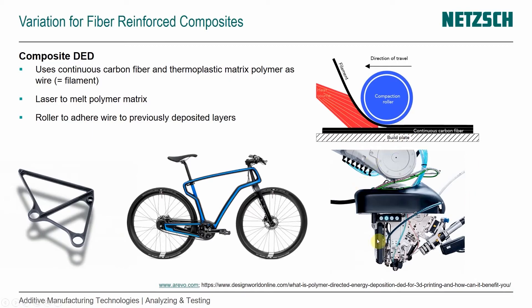Here is a photo of the print head, showing the roller and the laser, along with two examples of parts that can be produced. Similar to the metal DED I just mentioned, we're talking about structural and large-scale parts.